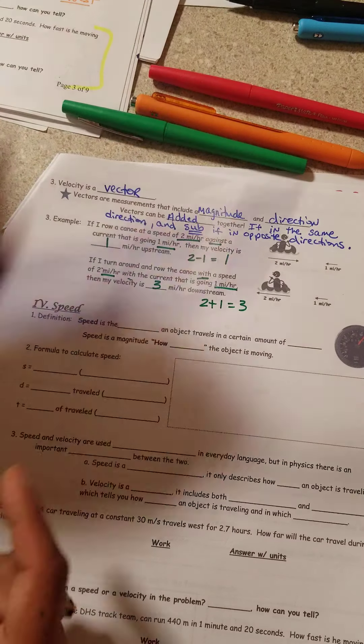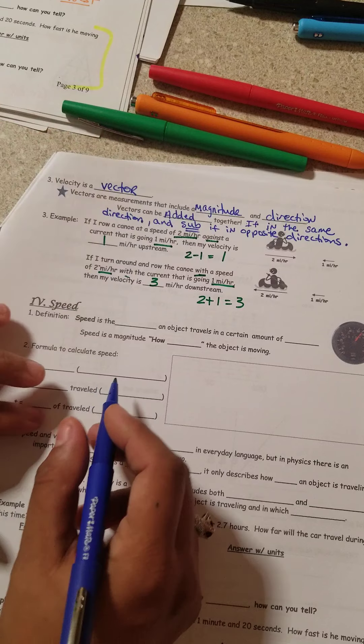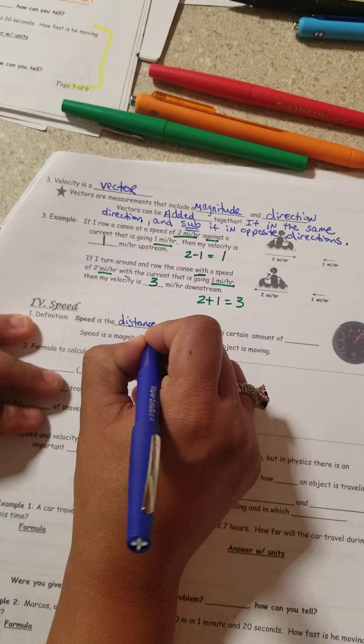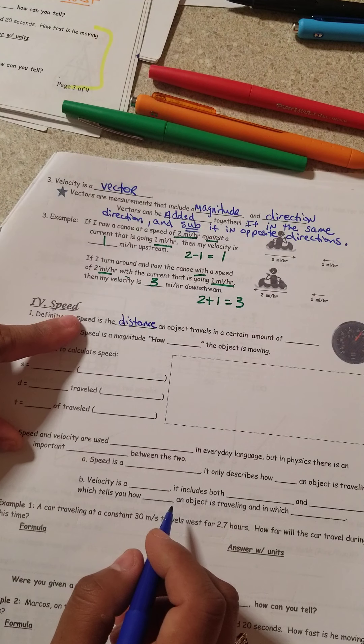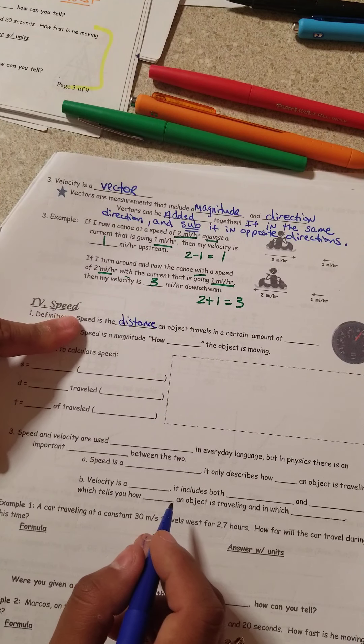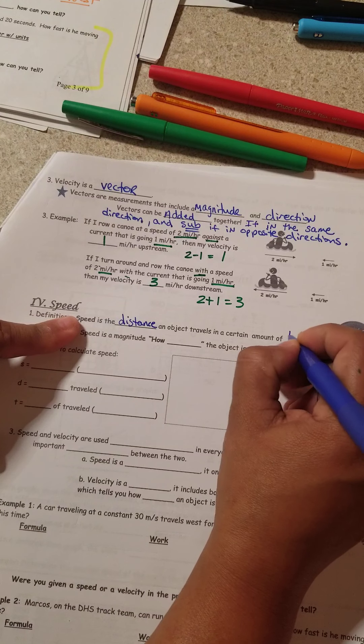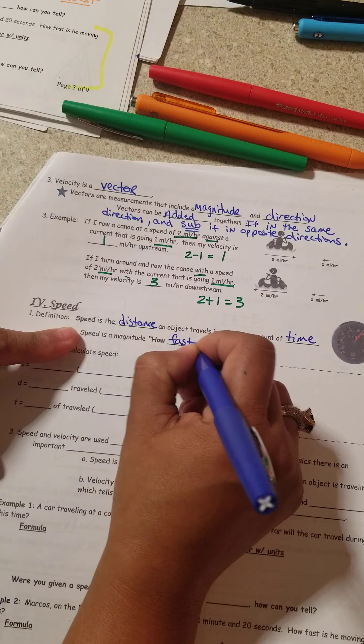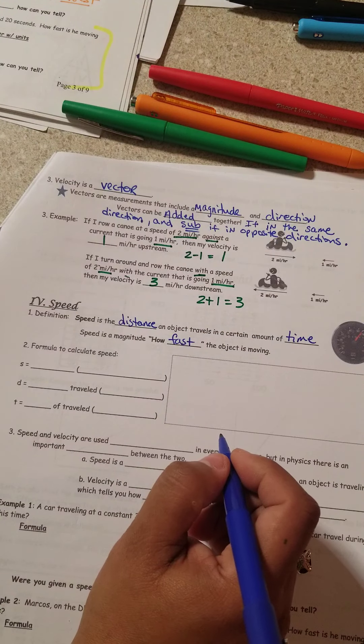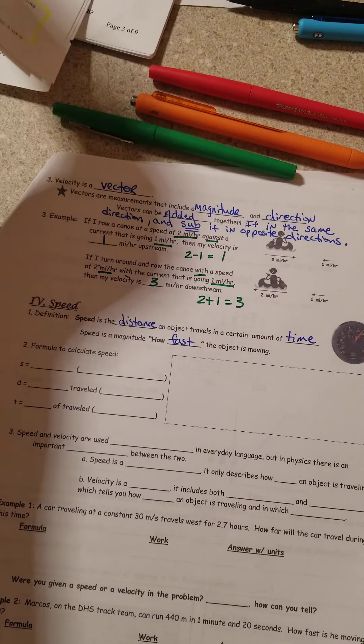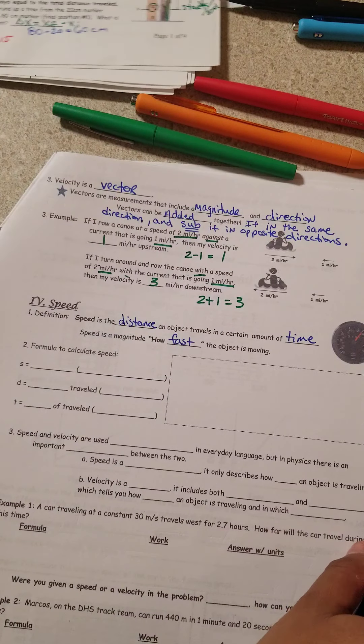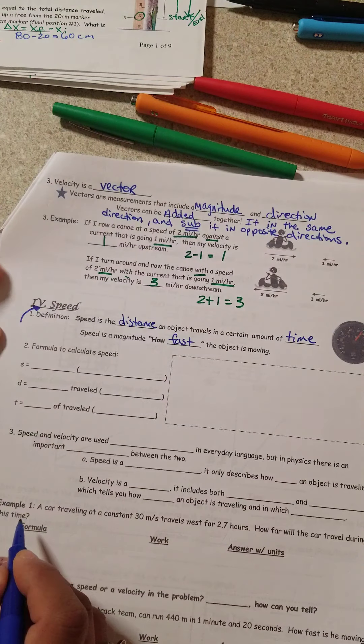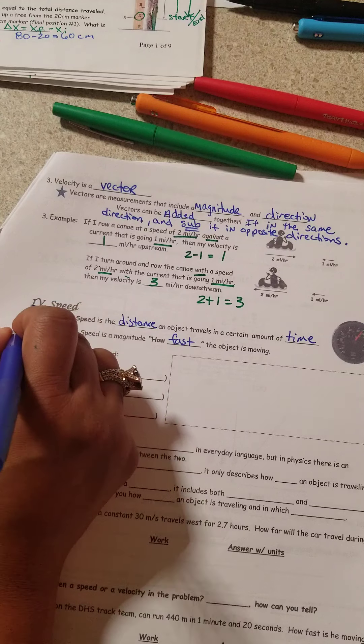It says here, define speed or the definition. Speed is the distance. Oh, they used the word distance. They did not use the word displacement. An object travels in a certain amount of time. Speed is a magnitude of how fast an object's moving. Speed is a scalar for some of those who were wondering. So let me go ahead and put that over here. Speed is a scalar.